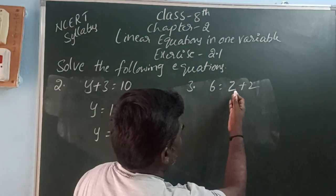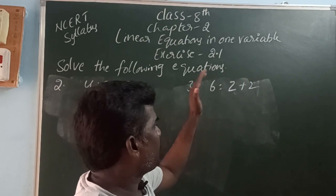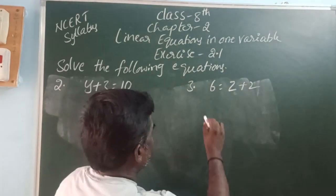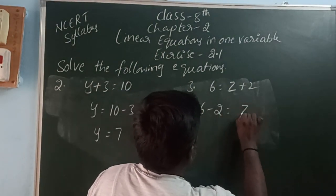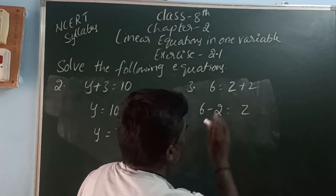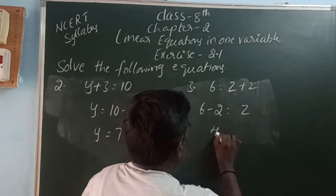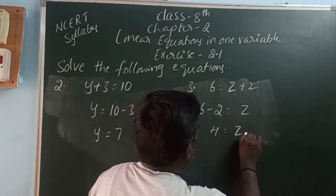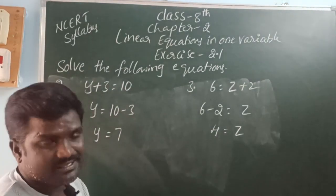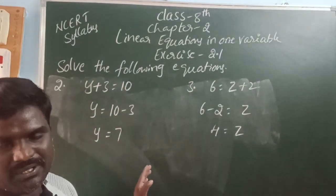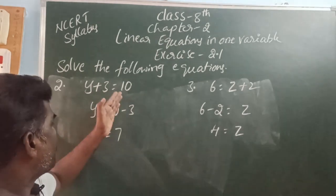6 is equal to z plus 2. Here, plus 2 is moving to the left side and it becomes minus. So that is, 6 minus 2 is equal to z. The unknown thing is z. So 6 minus 2 is 4. So the value of z is 4. This method is called with transform method.